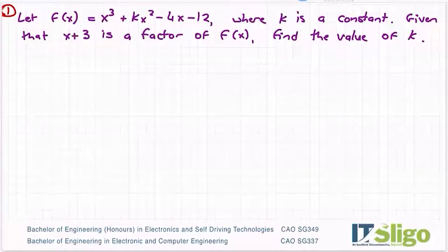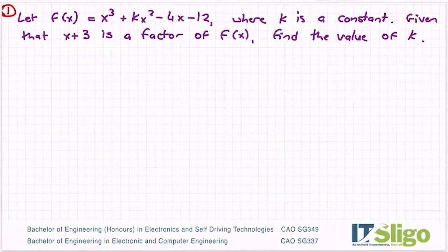This is the first question in a series of revision questions. We're starting off with algebra questions, indices and logs. The first one: let f(x) equal x³ + kx² - 4x - 12, where k is a constant. Given that x + 3 is a factor of f(x), find the value of k.